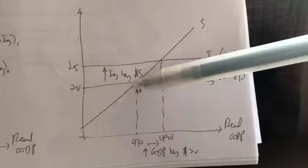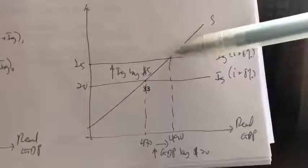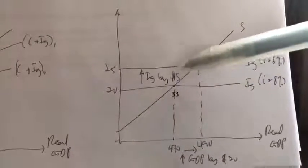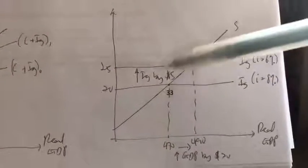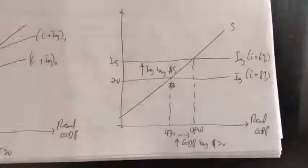So, here you can also show the multiply effect this way. Okay, change in initial spending over change in real GDP. Again, our multiplier is 4.